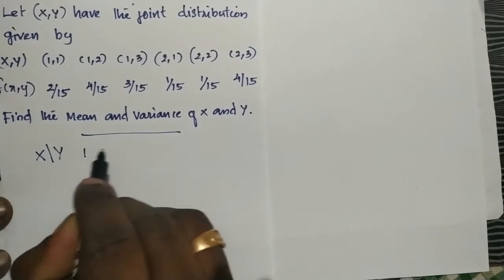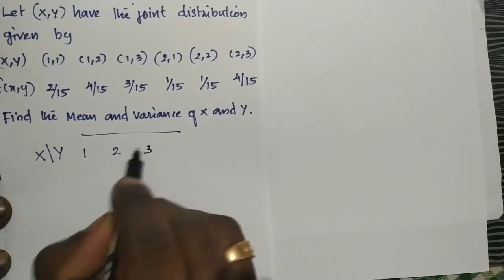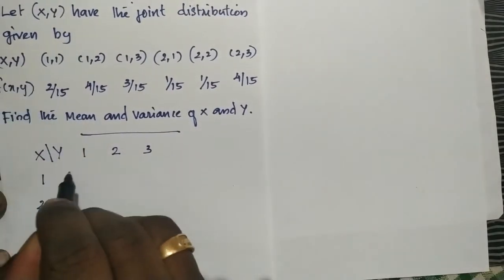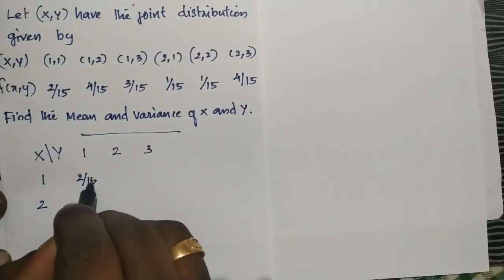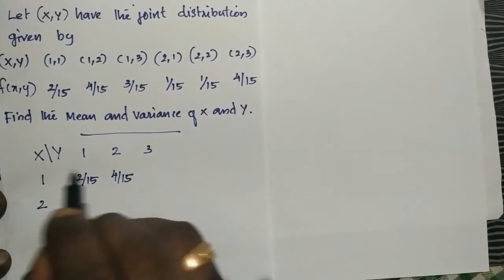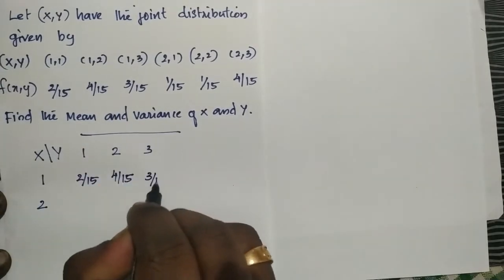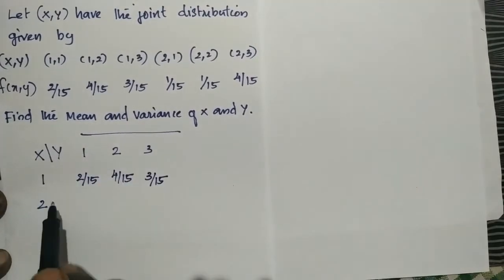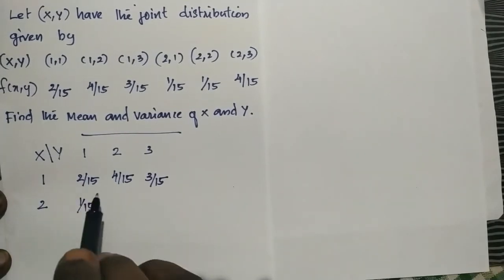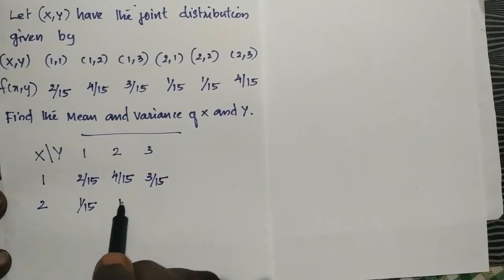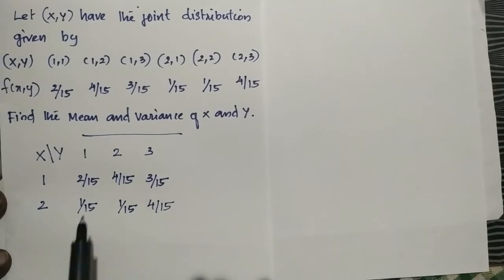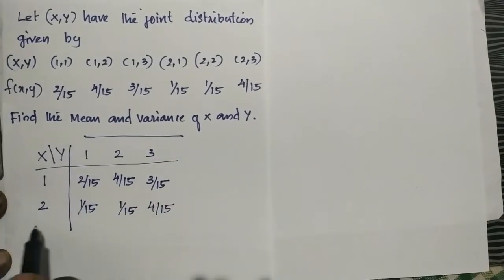Now we will take the table and arrange it. XY: for x=1, y=1: value is 1 by 15; x=1, y=2: 4 by 15; x=1, y=3: 3 by 15. Then x=2, y=1: 1 by 50; x=2, y=2: 1 by 50; x=2, y=3: 4 by 50. That is our joint distribution table.